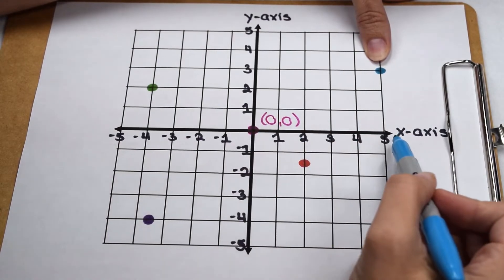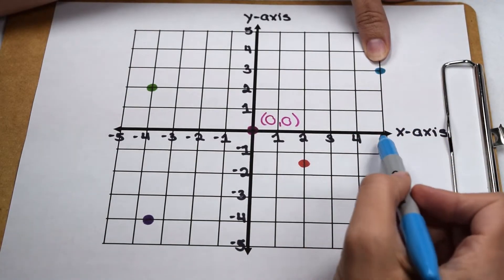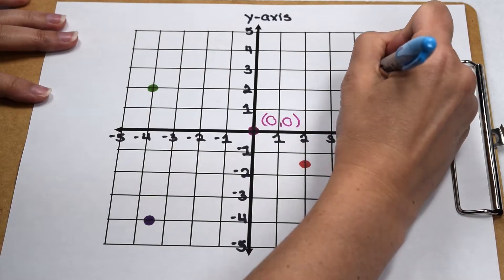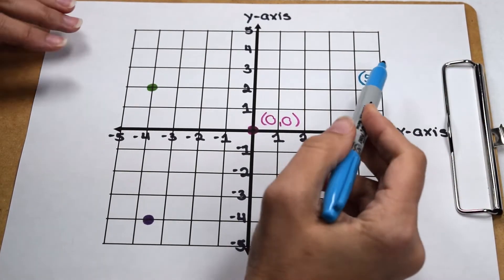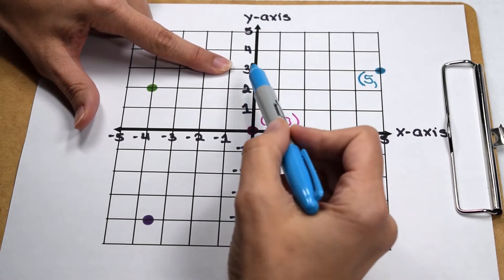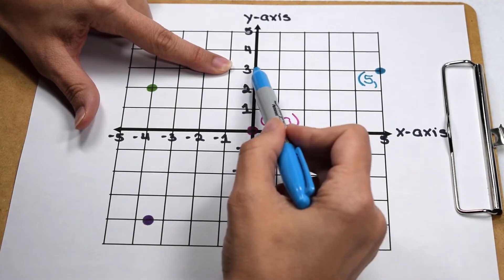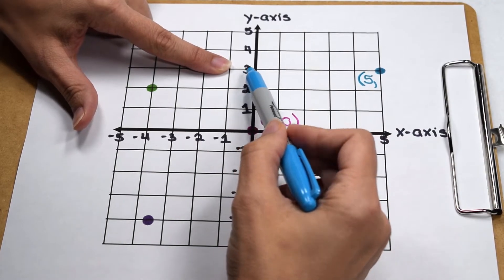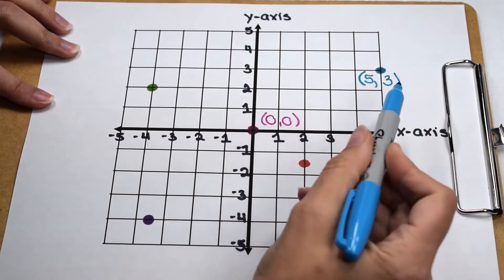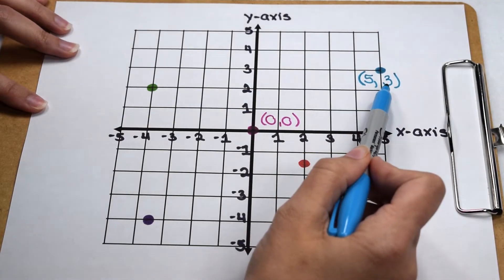We can see that we're to the right of our origin, so we know our x value is going to be positive. We notice that our point lines up with the 5 on the x-axis, so the x value in our ordered pair is positive 5. Looking at its y value, we're above the origin so our y value is positive, and our point lines up with 3 on the y-axis. So the ordered pair that best represents this point is (positive 5, positive 3).